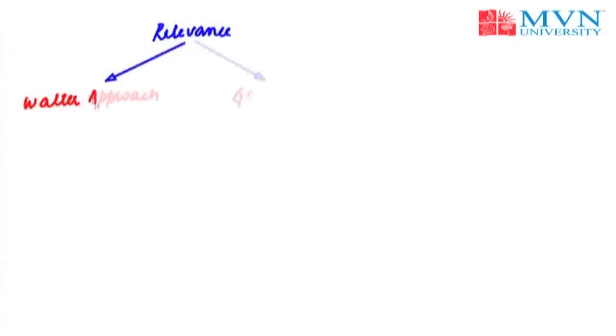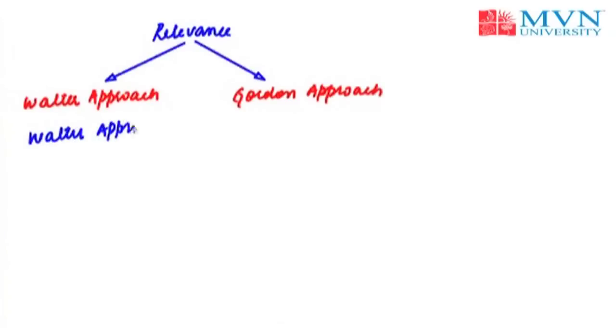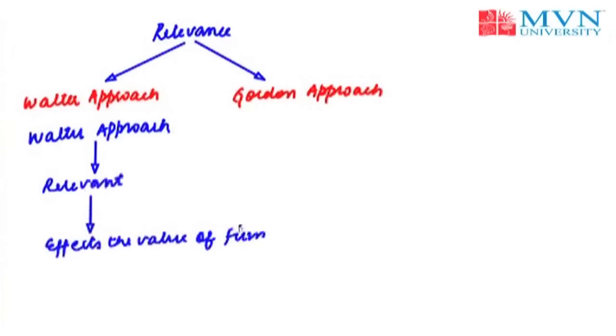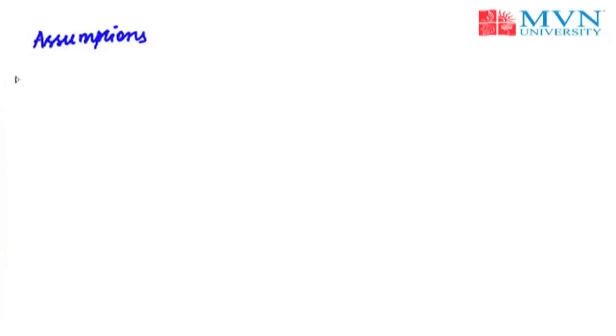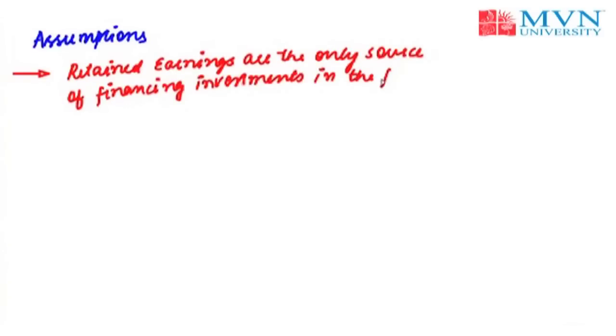Two important approaches supporting dividend relevance are the Walter approach and the Gordon approach. Now let's start with the Walter approach. Walter supports that dividend decisions are relevant and affect the value of the firm. Walter approach has certain assumptions. The first important assumption is that retained earnings are the only source of financing investment in the firm.